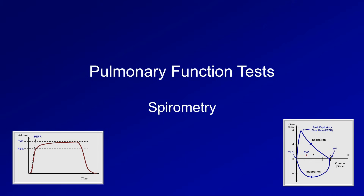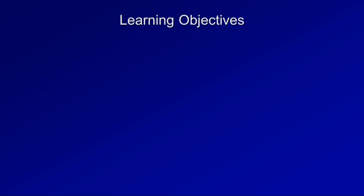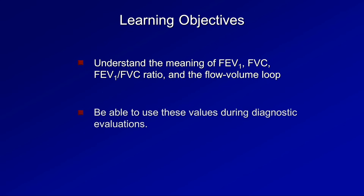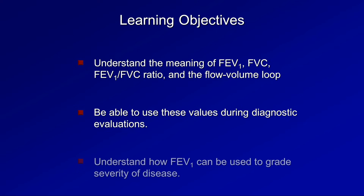This is the second video in this series on pulmonary function tests, and the topic is spirometry. The objectives of this video are to understand the meaning of FEV1, FVC, the FEV1 to FVC ratio, and the flow volume loop, to be able to use these values during diagnostic evaluations, and to understand how FEV1 can be used to grade severity of disease.